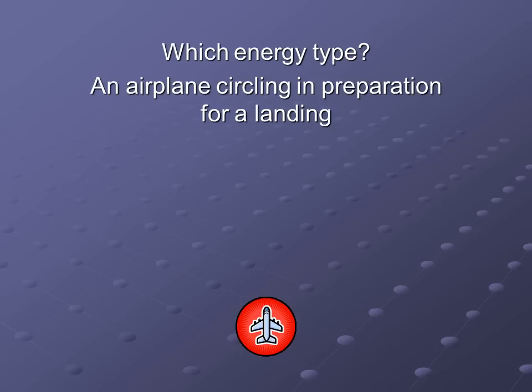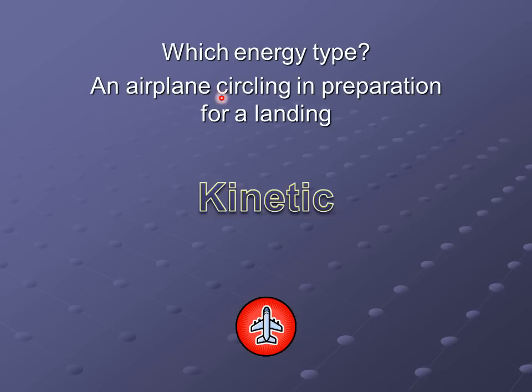Most of the rest of this video is going to be a whole lot of examples about whether it's potential or kinetic energy. As we go through these examples, all you need to do is write down the example and then write down if it is potential or kinetic. For this first example: an airplane circling in preparation for a landing. The correct answer for this one is kinetic energy.